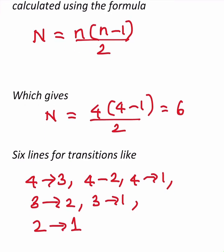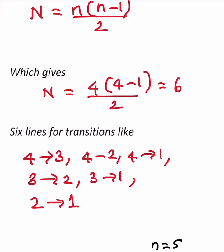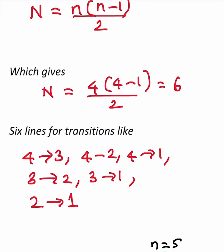Now substitute in the place of n, 4, because they ask it for the fourth orbit. 4 into 4 minus 1, that is 4 into 3, which is 12 divided by 2, which is equal to 6.